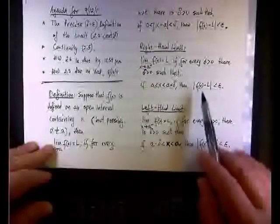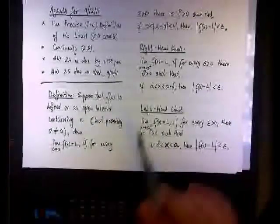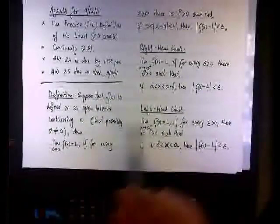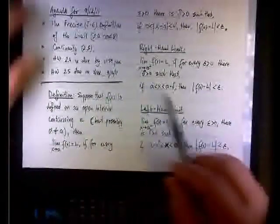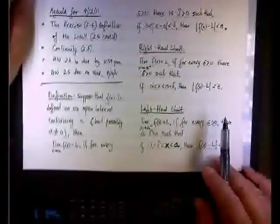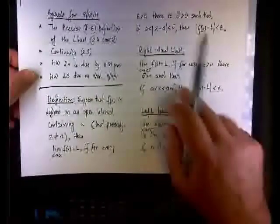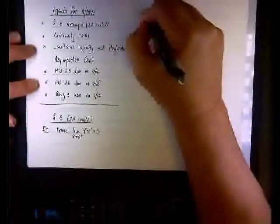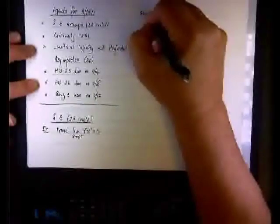Remember, L is the limit value, a is the x-value — x approaches a plus in this case — and below that we have a minus. So we're going to implement this definition.